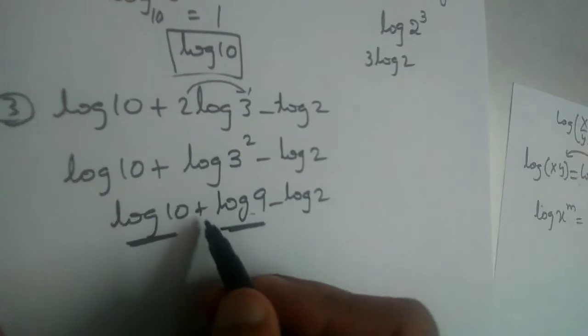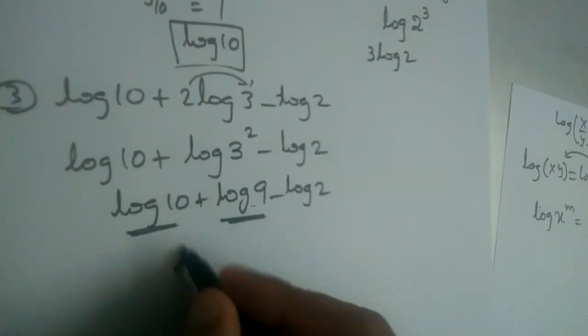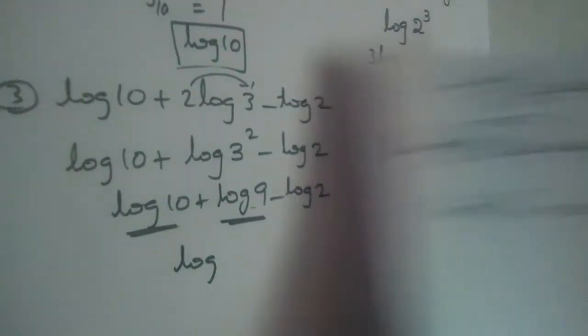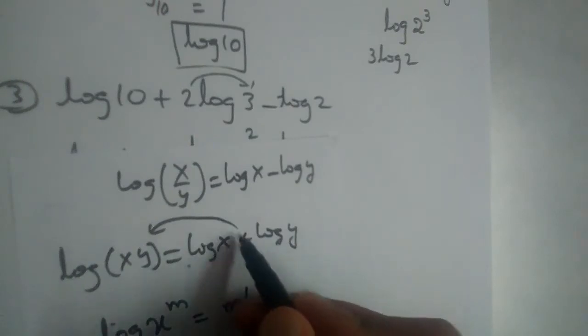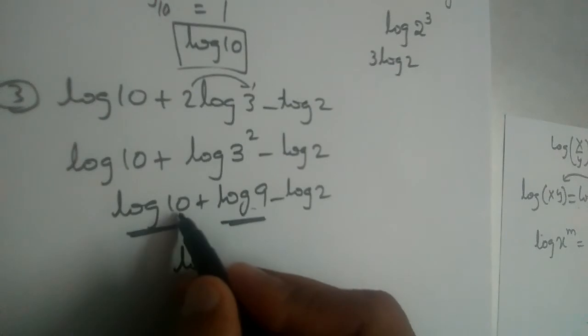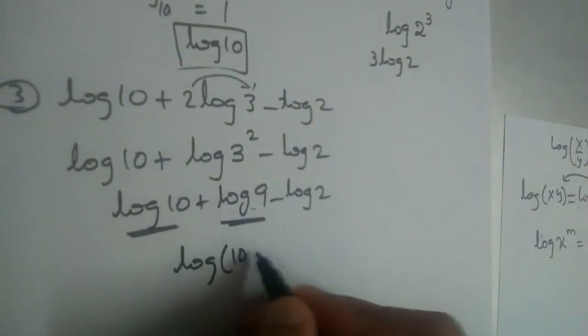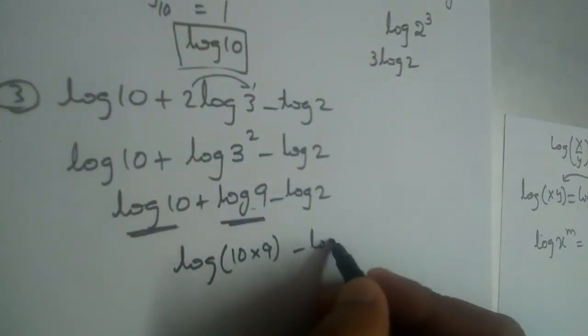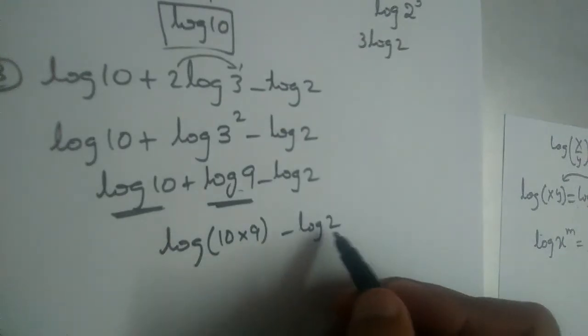Now these two logs, we have a plus sign here, addition. Addition means we should multiply them. Log x plus log y can be written as log xy. So this log x plus log y can be written as log x into y minus log 2.